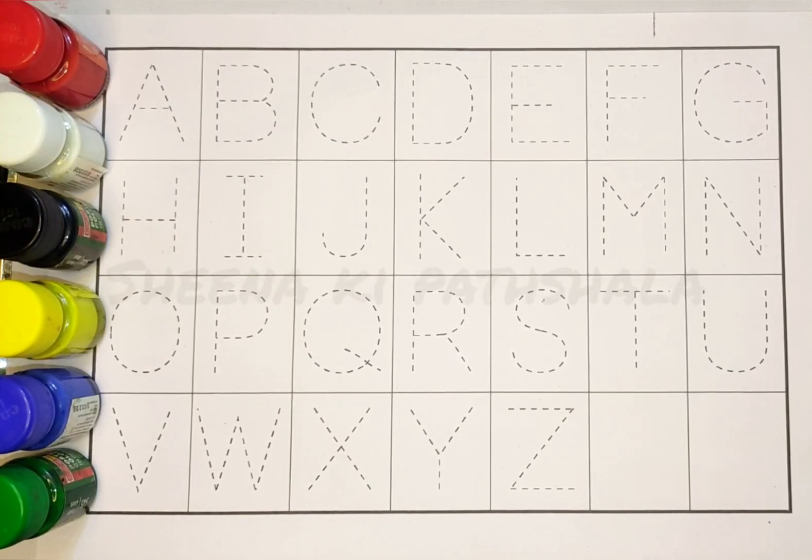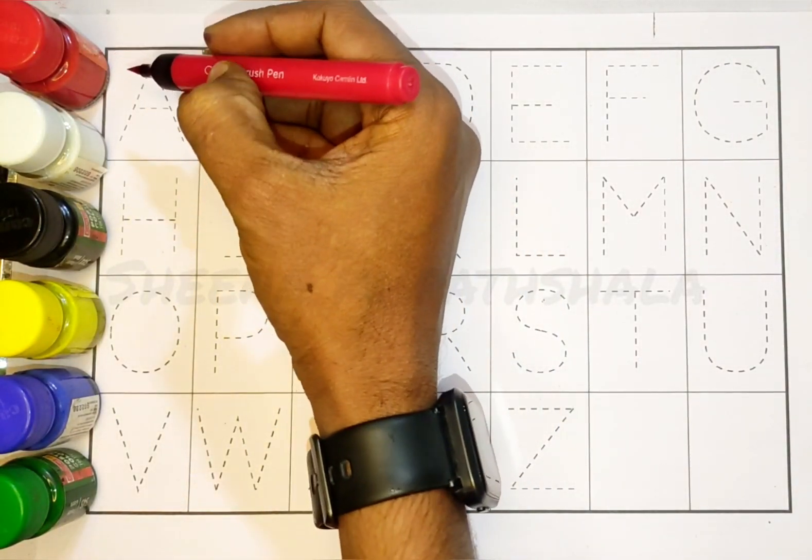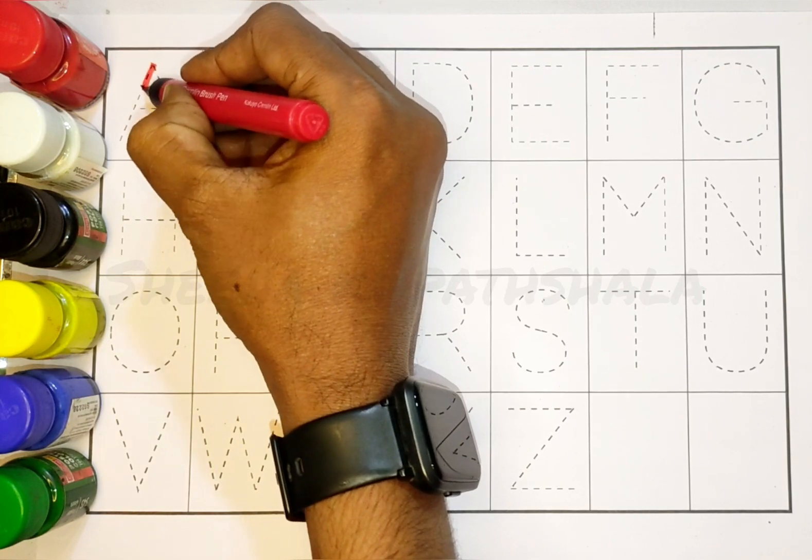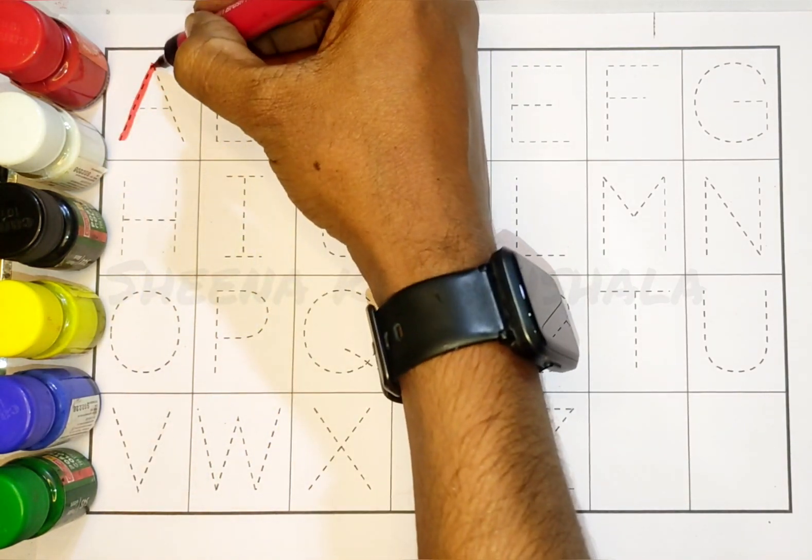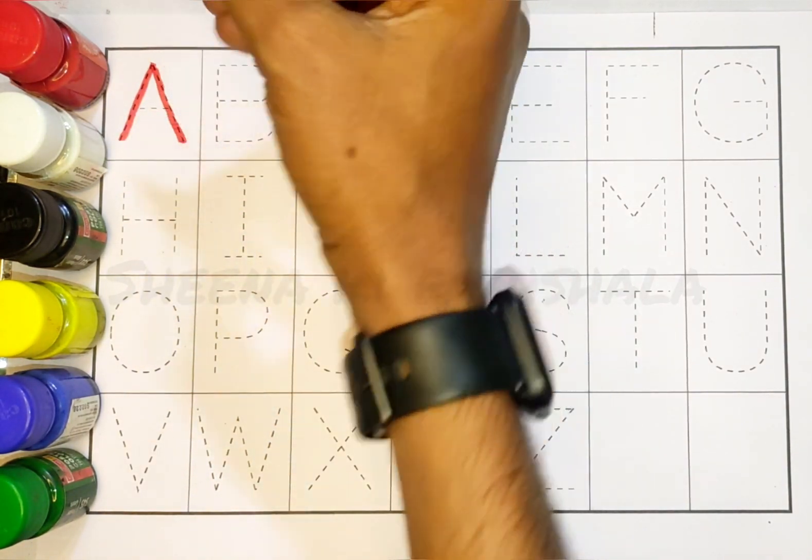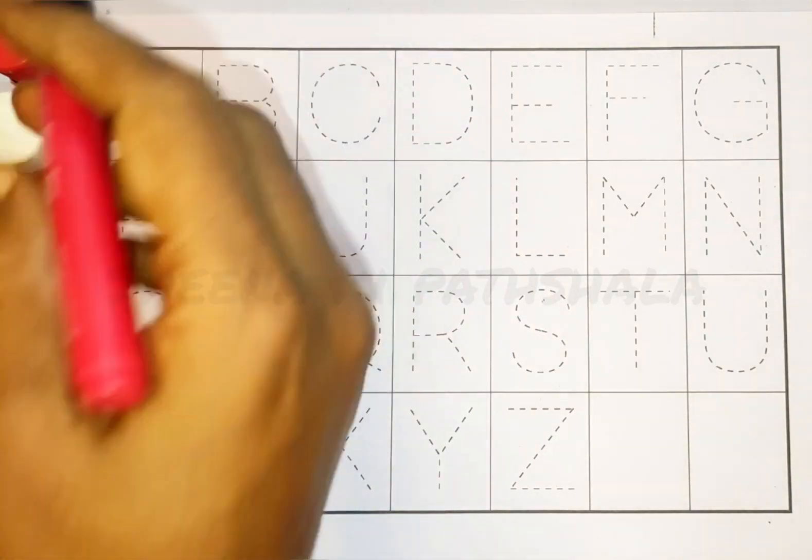A, B, C, D in capital letters. Red color, A, A for apple.